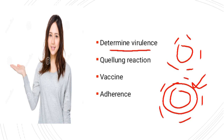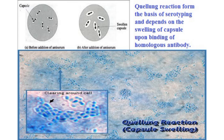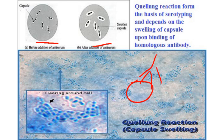The second medical importance is the quelling reaction. What is the quelling reaction? The quelling reaction is the swelling of the bacterial capsule. As you can see here, this is an unswelled capsule and this is swelled. As we have discussed, bacteria contain different sugars — the sugar component of the capsule varies from one bacteria to another, and hence its antigen varies. So when a homologous antibody attaches with a capsular antigen, this capsule will swell. This is called the quelling reaction.